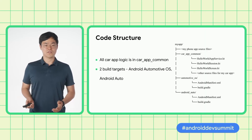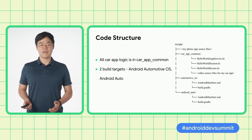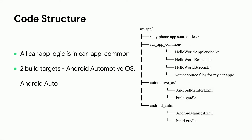We start with the code structure. Our code base has four components. The first is our phone app component, where the code and resources needed for the phone app will be placed. Then, we have the common car app component that contains all the car app code and resources. This component will be shared between the Android Auto and Automotive OS build targets. Next, we have the Android Auto and Automotive OS components, which just contain the Android manifest and the build.gradle files.